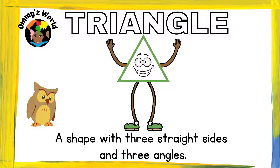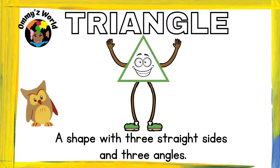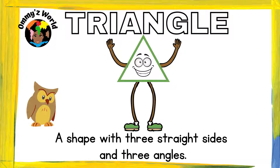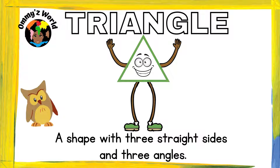The next shape is a triangle. A triangle is a shape with three straight sides and three angles. I know you can think of things that have the same shape as a triangle.